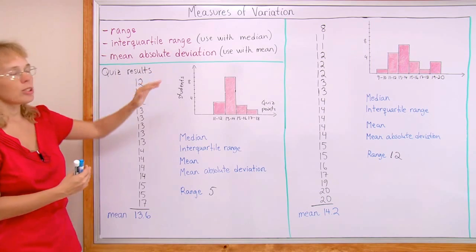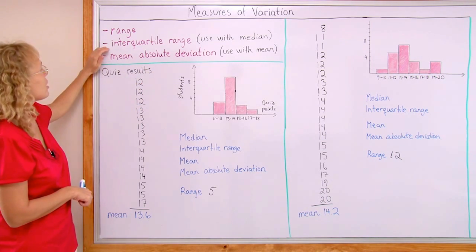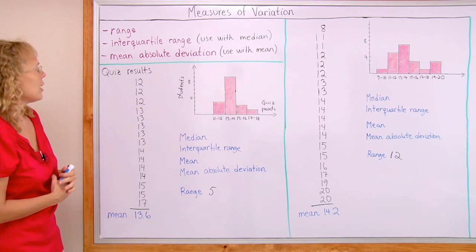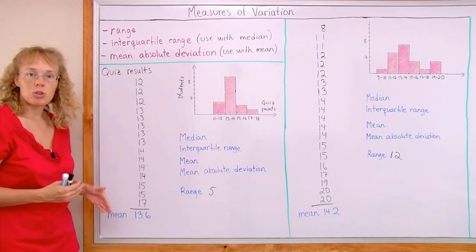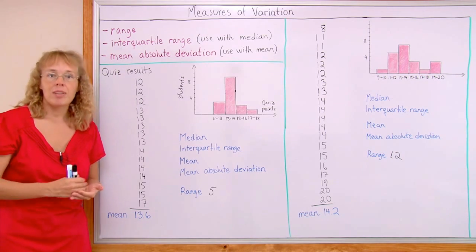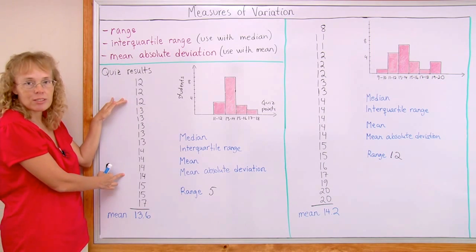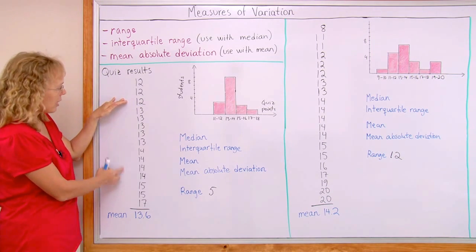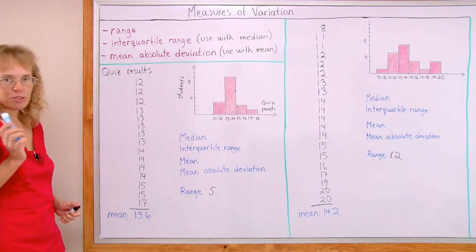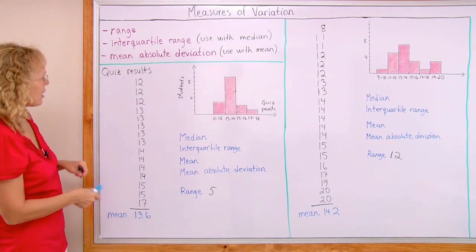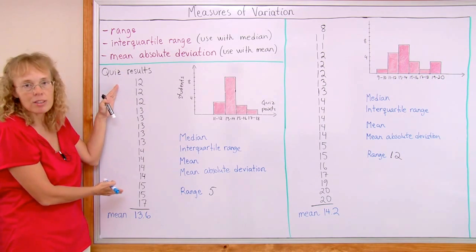Let's look at these others, too. Interquartile range. You use it with median. In fact, you have to calculate the median to find the interquartile range. And what it is, is basically we will divide this data into quarters or into fourths. And then we will take the first and third quarter point and subtract and find the range here, find the difference. For that, we first need to find the median.